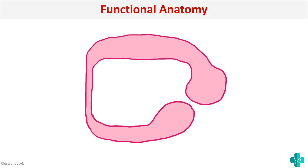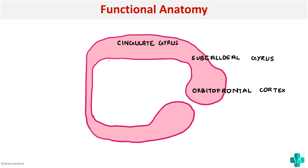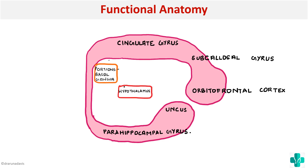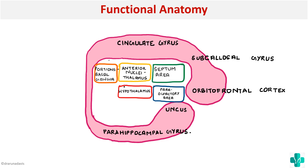The cortical structures start with the orbitofrontal cortex, then the subcallosal gyrus — very important — the cingulate gyrus, the parahippocampal gyrus, and finally the uncus. This completes the cortical structures. The subcortical structures include the hypothalamus, portions of basal ganglia, anterior nuclei of thalamus, the septum area, para-olfactory area, amygdala, and the hippocampus.